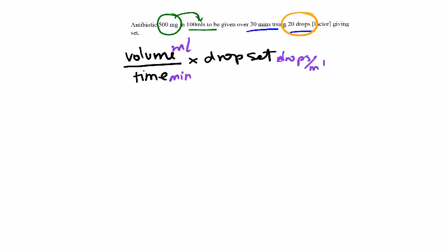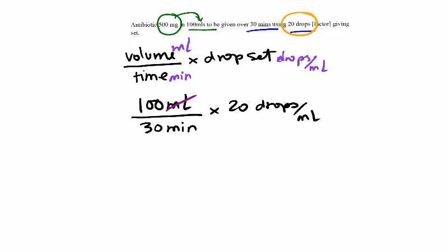Let's see how this is going to look. The volume is 100 mL divided by the time in minutes - it's already in minutes so there's no need to convert hours into minutes - multiplied by 20 drops per mL. The mLs cancel out, mL on top, mL on the bottom.